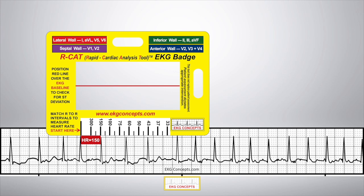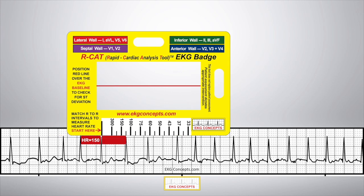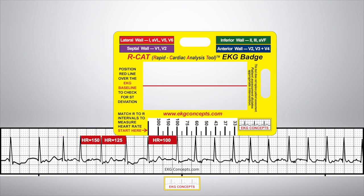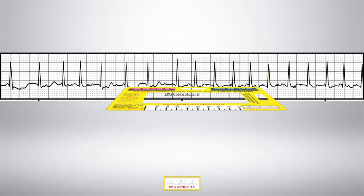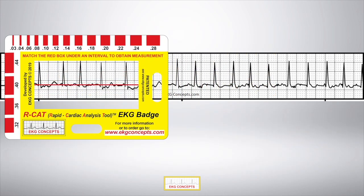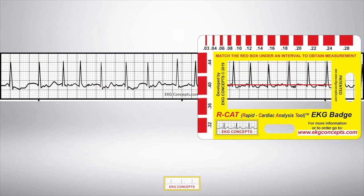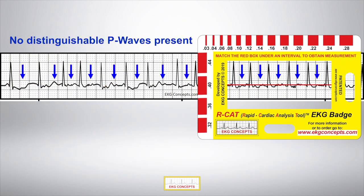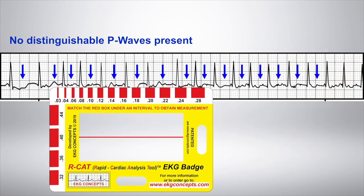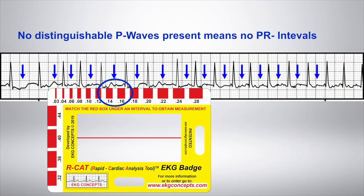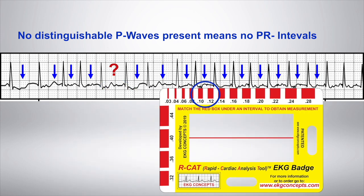Using the EKG badge to measure the heart rate, you will notice it is fast — greater than 100 — and irregular. Slide the red baseline on the EKG and notice there are no distinguishable P waves present. With no distinguishable P waves present, there are no PR intervals to measure.